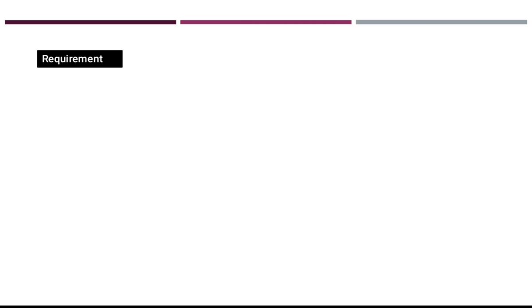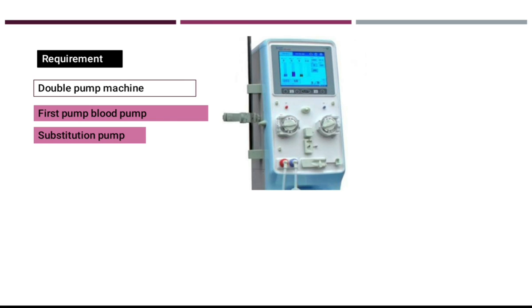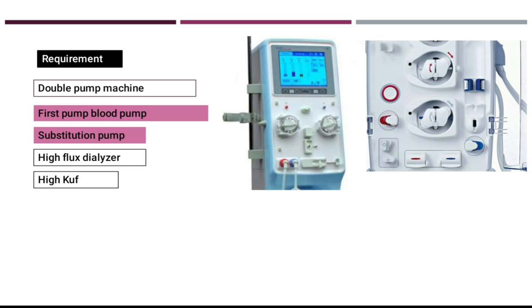Requirements for hemodiafiltration: first, you need a double pump machine — one pump is the blood pump and the second pump is the substitution pump. Next, you need a high flux dialyzer for convection, so that convection can be performed, because without convection hemodiafiltration has no meaning. The ultrafiltration coefficient of the high flux dialyzer must also be high.